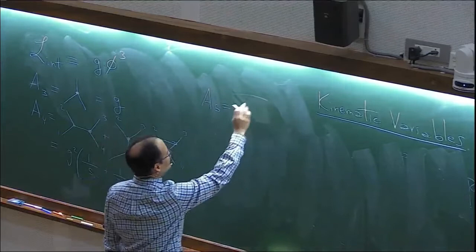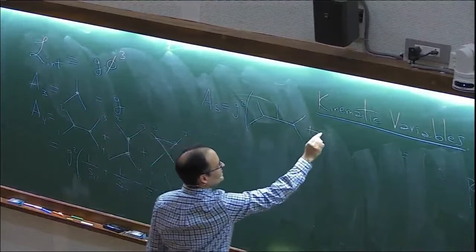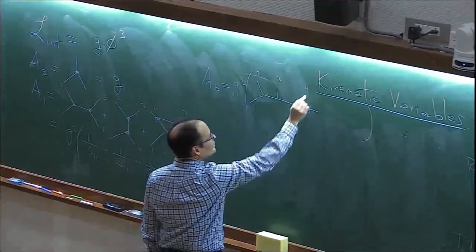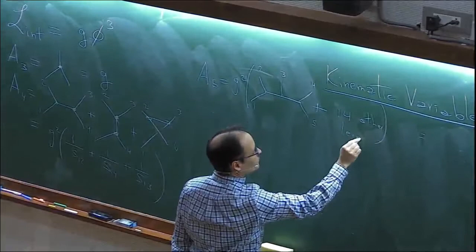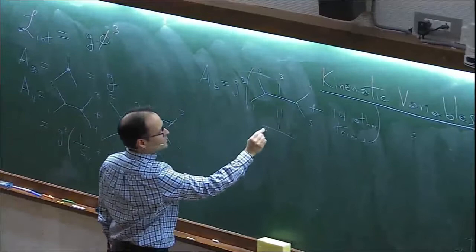The four-particle amplitude you know is given by the sum over the three channels. This is the high school version. And maybe even last year of high school you did the five-particle amplitude: one, two, three, four, five plus 14 other terms. In terms of kinematic invariants it is given by something like that.